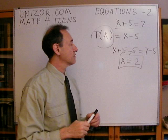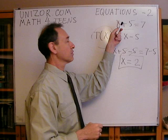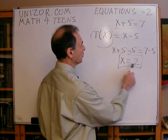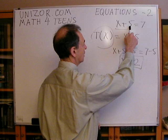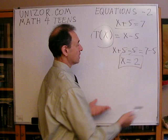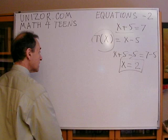What's important about this transformation being invariant is that not only can you go from the original equation to the solution, but you can also go backwards. The inverse transformation — adding 5 to both sides — brings you back to the start. So these equations are completely equivalent; they have exactly the same solutions. This is the easy part.